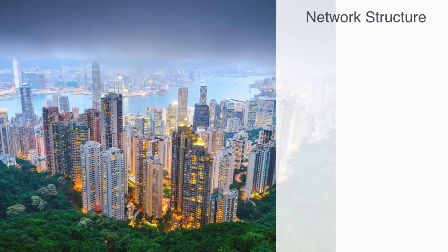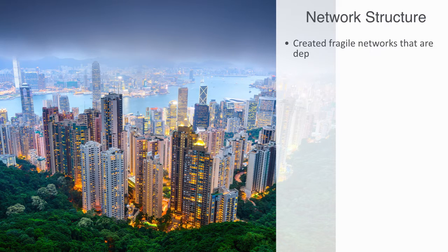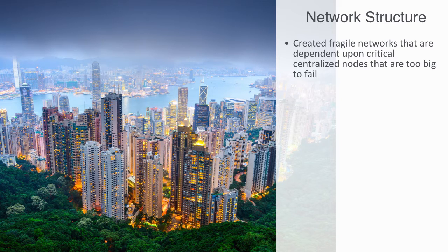Another key metric to the internal network structure is its degree of distribution and centralization. The economics of scale, that have been a key driver in the development of industrial economies, have created fragile networks that are dependent upon critical centralized nodes. This makes these centralized nodes too big to fail, as their loss can potentially disintegrate the entire network. Just as these local and global hubs facilitate connectivity, they also facilitate failure spreading.